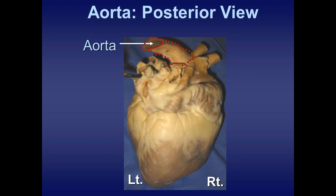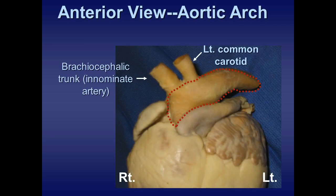The vessel originating from the left ventricle is called the aorta, which carries oxygenated blood to the body. The aorta forms the aortic arch, which moves caudally inside the thoracic cavity as the thoracic aorta, then passes through the diaphragm into the abdomen as the abdominal aorta. It also supplies blood to the head and neck. The brachiocephalic trunk is present cranially.